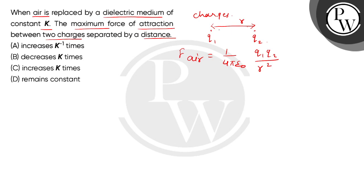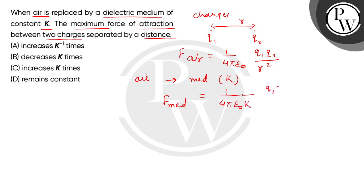The question states that we replace the air with a dielectric medium of constant K. So now we write the force in the medium, which is 1 divided by 4π epsilon-0, multiplied by the dielectric constant K of the medium, and multiplied by the product of the magnitudes of the charges divided by the distance squared.